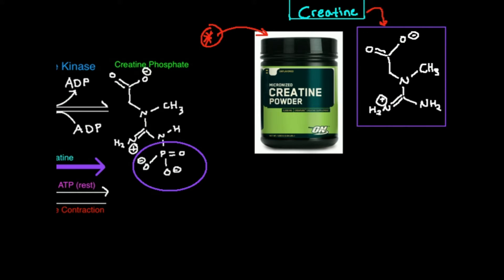As we saw in a previous video, creatine is biologically derived from two amino acids: glycine and arginine. This means creatine is actually a molecule that we can make ourselves — meaning it's not an essential nutrient. Essential nutrients means you have to get them through the diet. Creatine, however, we can biosynthesize from everyday molecules, in particular arginine and glycine. However, it's been shown experimentally and in practice that supplementing with creatine can actually improve exercise performance.